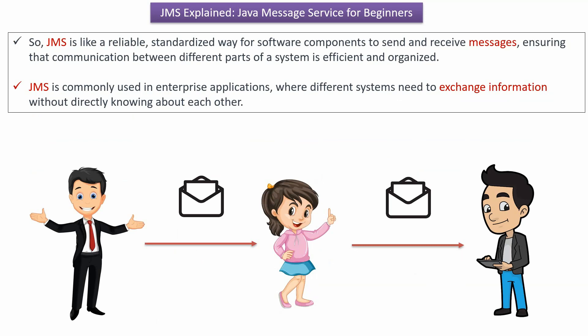JMS is commonly used in enterprise applications, where different systems need to exchange information without directly knowing about each other.